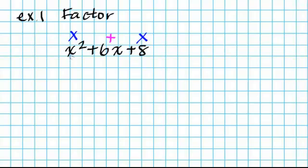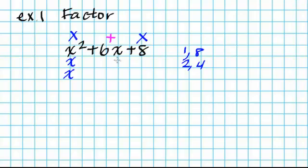I ask myself: factors of x squared — in order to get x squared, I'd have to multiply x times x. Then I ask myself, what are factors of 8? Factors of 8 are 1 and 8, and 2 and 4. The center terms have to add up to 6x, so which of these combinations would add up to 6? Let's try 2 and 4.